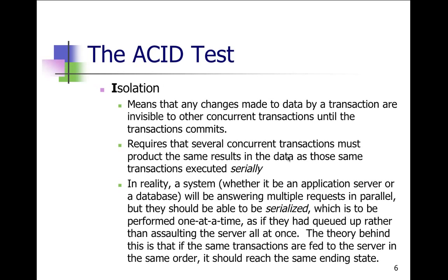Isolation: this transaction is isolated from all other transactions. The changes made to data by a transaction are invisible to other concurrent transactions until the transaction commits. Going back to ATMs: in the old days you could get multiple ATM cards on the same account. If you had two cards with the same number on the same account and went to two different ATMs, you could simultaneously withdraw the same money twice without the bank knowing the money isn't there for the second transaction.